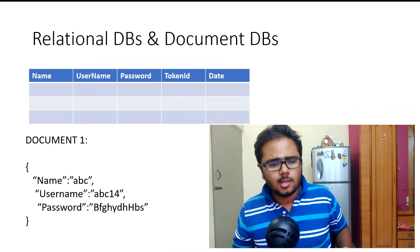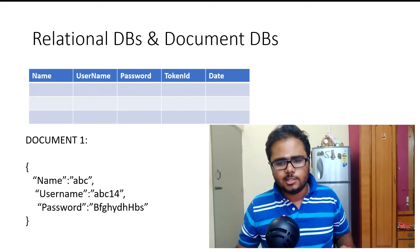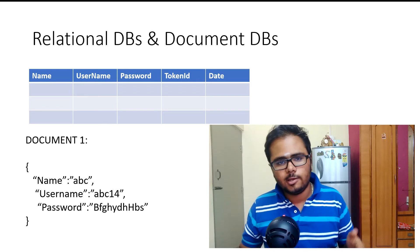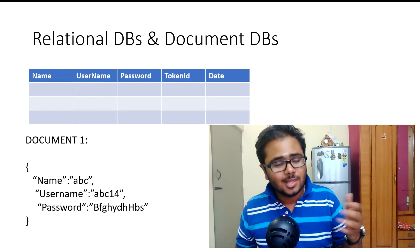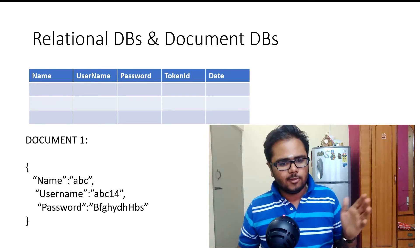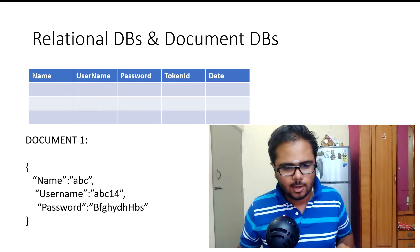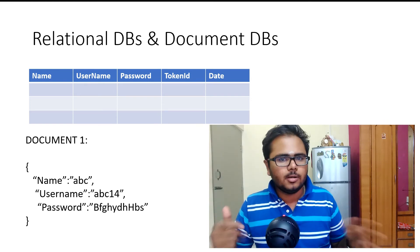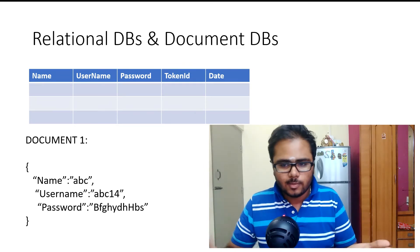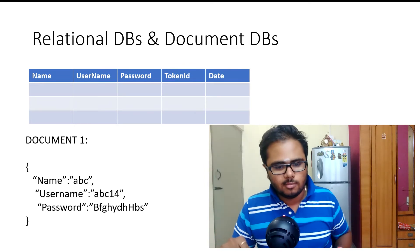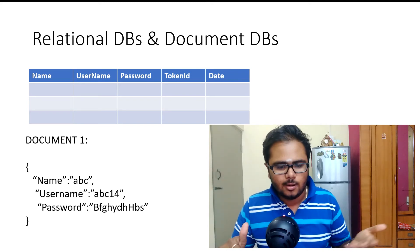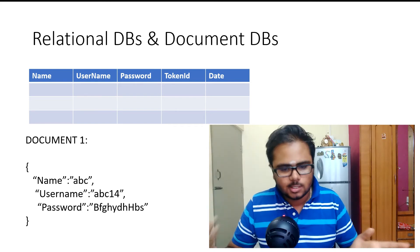Here is a small illustration of relational databases versus document databases. The first blue table is an illustration of relational databases, where you have name, username, password, token ID, and date with different rows and columns. The second one below is an example for document databases like MongoDB, where you have the document with key-value pairs, and you could also have inner nested documents.